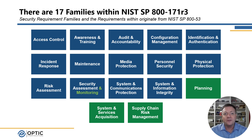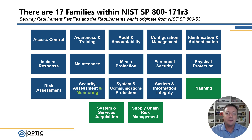Now let's take a look at the 17 families within 171 Rev 3. The majority of the families, or groups of security requirements, did not change, but there are three new families. They are: Planning, which introduced four requirements; System and Services Acquisition with two requirements; and Supply Chain Risk Management with four requirements. These families were added to align with SP 800-53 Rev 5, and NIST also believes they are important enough to be included in 171 Rev 3.